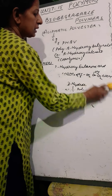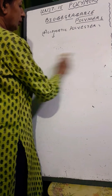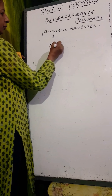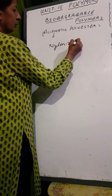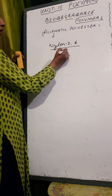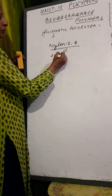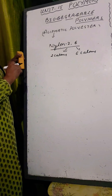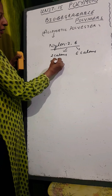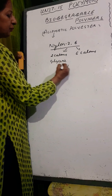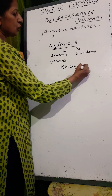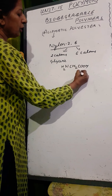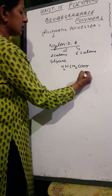Another example of a biodegradable polymer is Nylon-2-6. It is designated as Nylon-2-6 because one monomer comprises two carbon atoms and the other monomer has six carbon atoms. The first monomer having two carbon atoms is glycine, the simplest amino acid, with formula NH2-CH2-COOH.